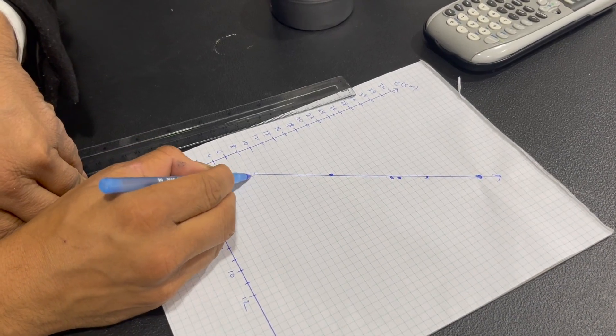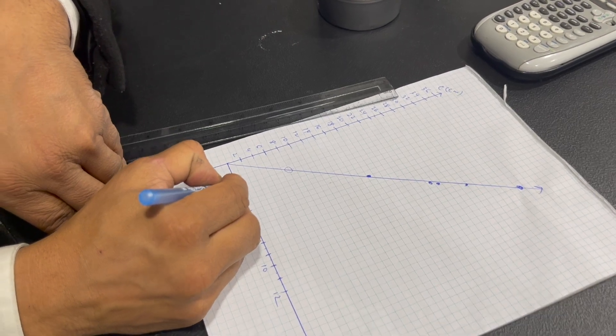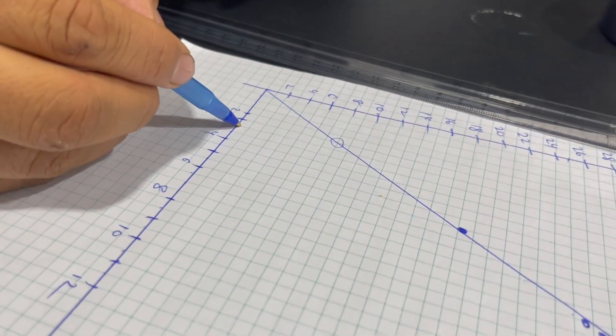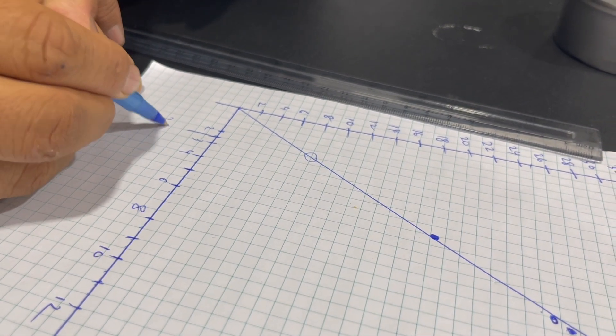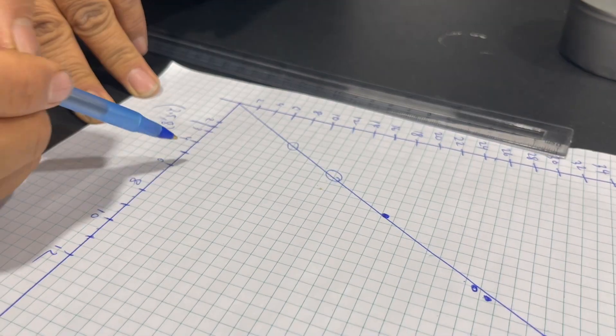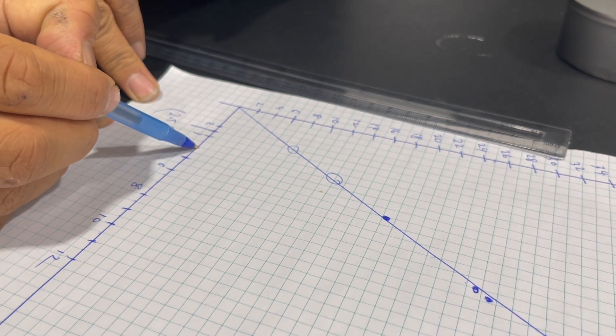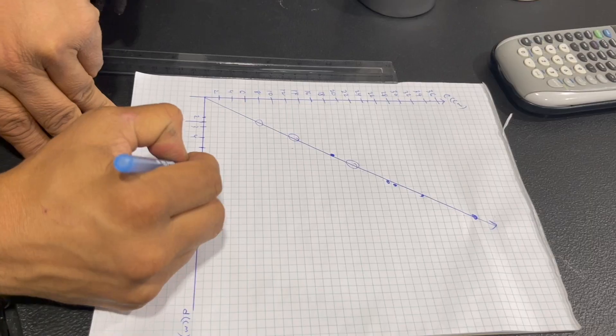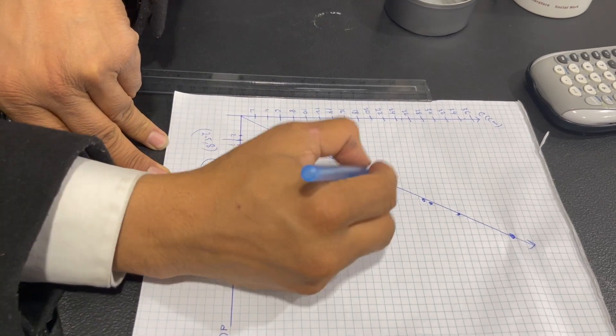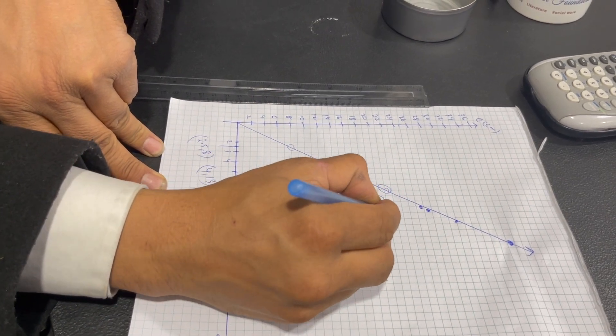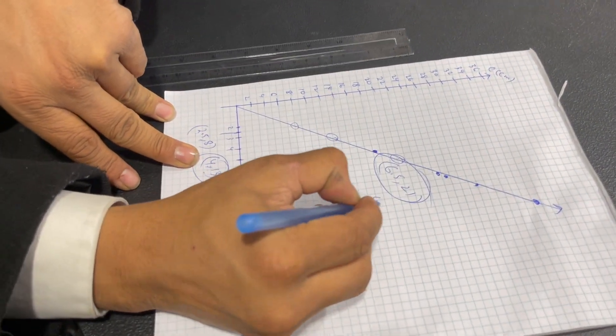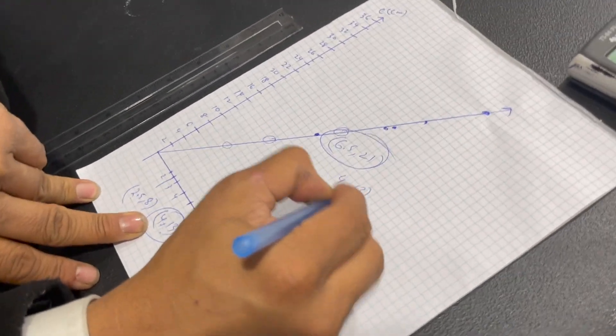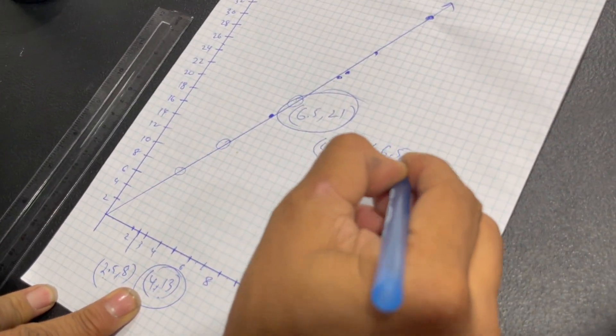Let's see. This is a point. And that would be, this is 3, so this is 2.5. So 2.5 comma 8. This point would be 4 comma 13. This is 7, 6.5 comma 21. This one and this one. Okay. So this one 4.4 comma 13. And 6.5 comma 21.